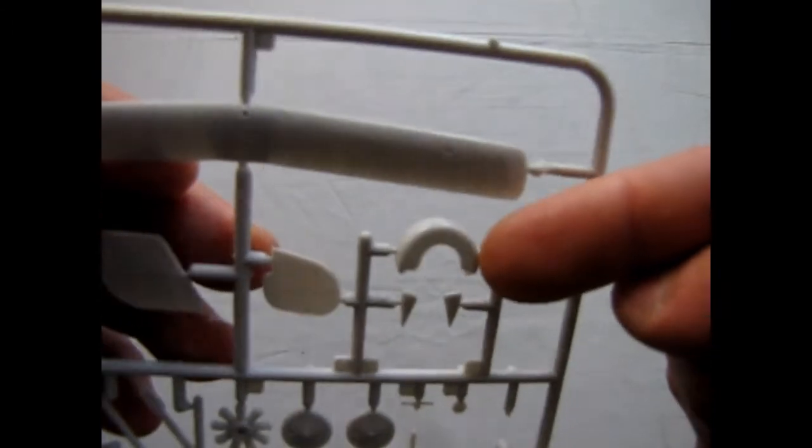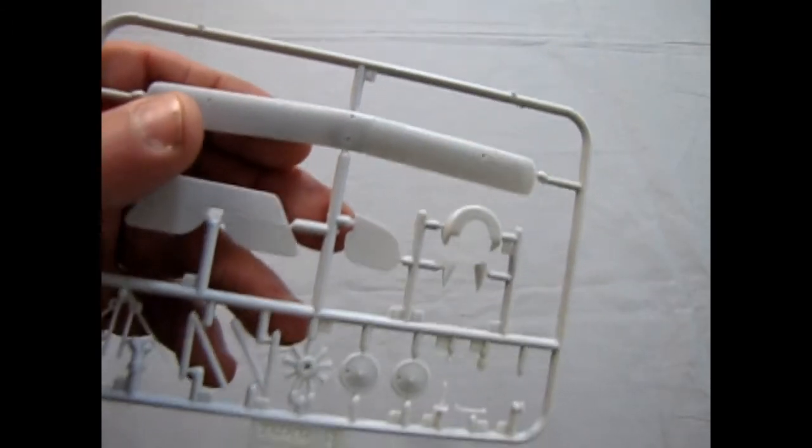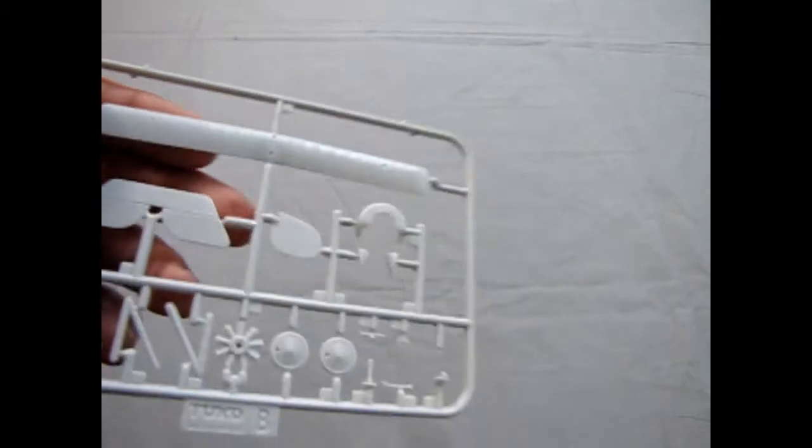And there's a cowl for the front of the engine. And on this one, it was only a half cowl. On the Newport 17, the cowl goes all the way around, but of course, that is a later airplane.